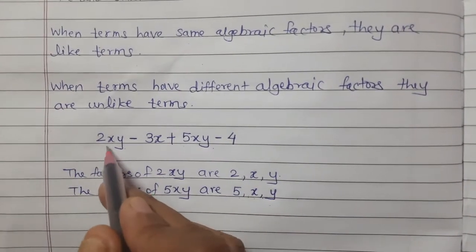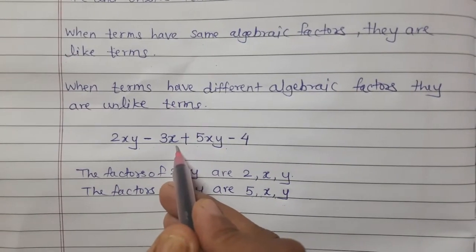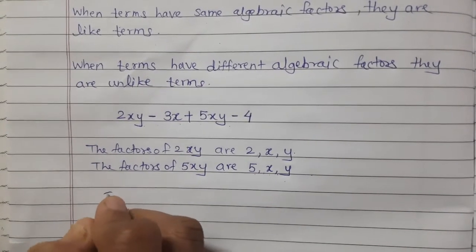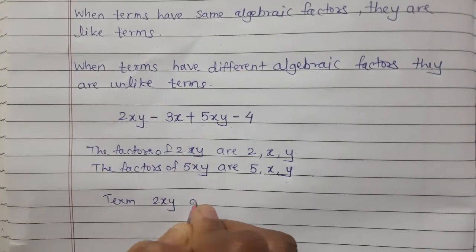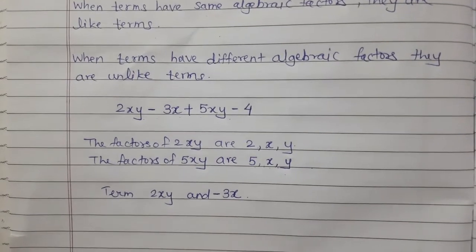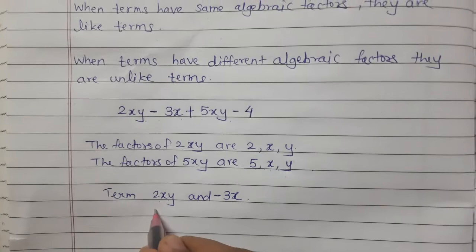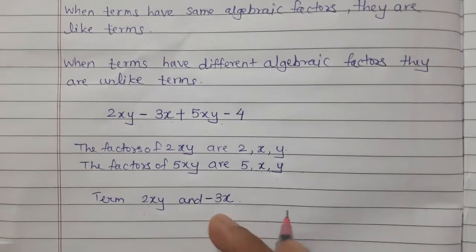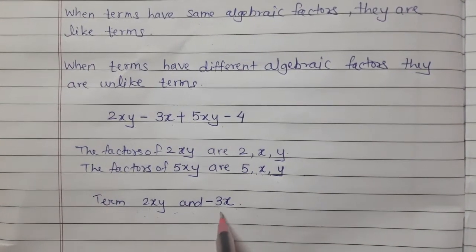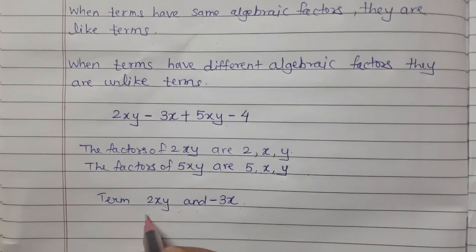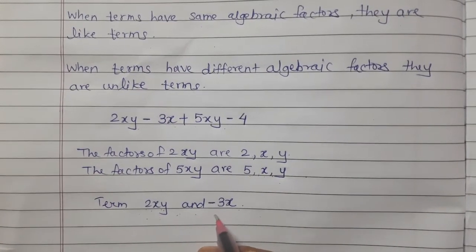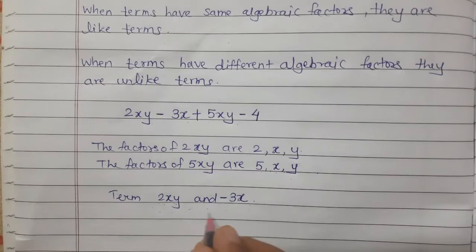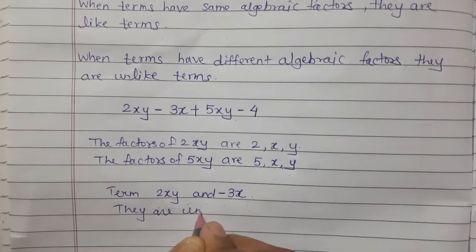Now see 2xy and minus 3x. These two terms have different algebraic factors. The factors of 2xy are 2, x, and y. And the factors of minus 3x are minus 3 and x. So they have different algebraic factors — therefore they are unlike terms.